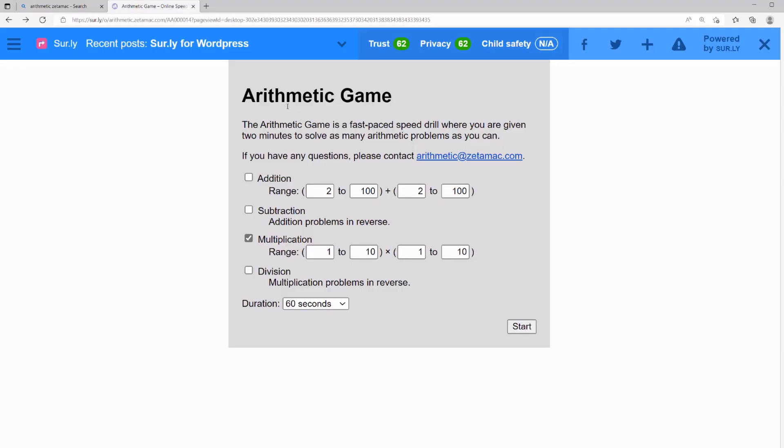Let's try this arithmetic game again. Just google arithmetic Zetimac. This time let's choose multiplication 1 to 10 and 1 to 20 and see how this goes.